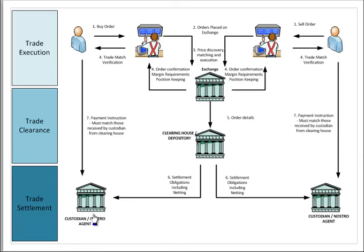All it's waiting for is for the investor to submit their formal instruction to settle this transaction. When this happens, the payment must match the payment that is made at the custodian and the nostro. When this matches, there is transfer of cash from the custodian or the nostro agent for security, and the clearinghouse formally deregisters the buyer and re-registers the seller. That way, the security is kept in electronic bookkeeping form at the depository.